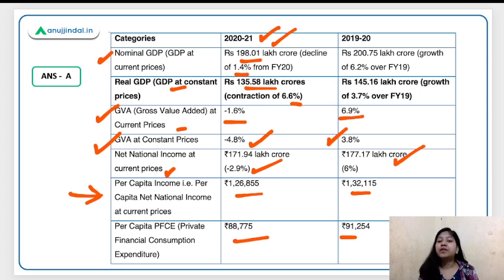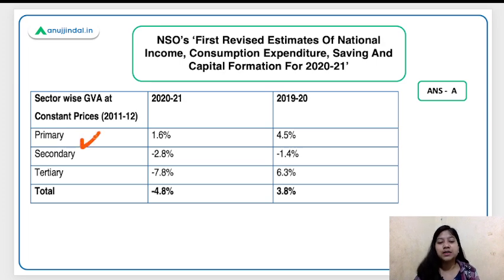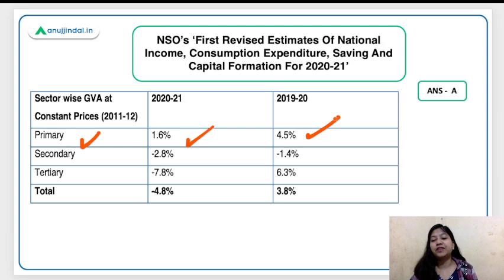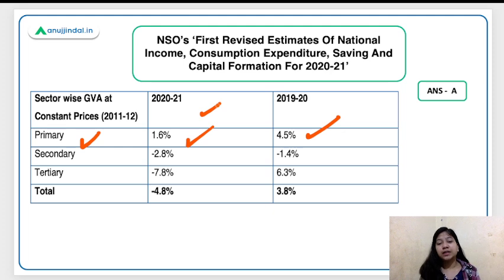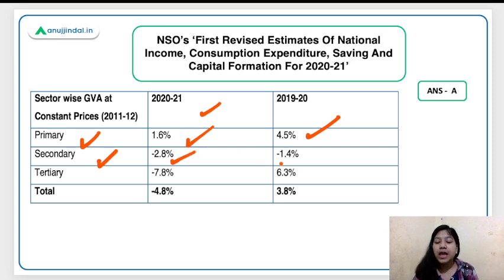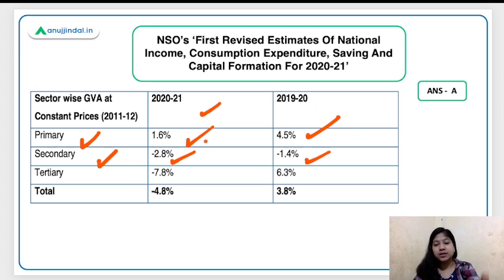Now for sectoral growth: the primary sector — agriculture and allied services — showed a growth rate of 1.6 percent in FY21 and 4.5 percent in FY20. Among all sectors, only the primary sector showed a positive trend in FY21. Agricultural work continued even during lockdowns. The secondary sector faced a contraction of minus 2.8 percent in FY21.